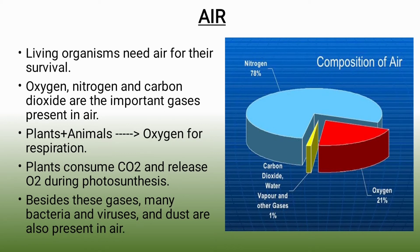The second component of the abiotic environment is air. Air is a mixture of gases in which nitrogen, oxygen, carbon dioxide, some inert gases, dust, smoke, germs, and microscopic organisms are all present.